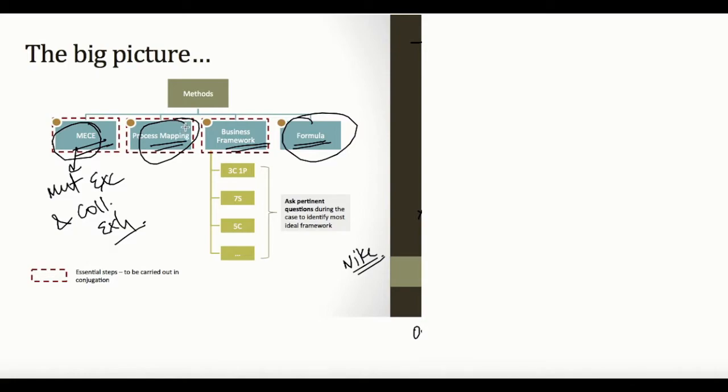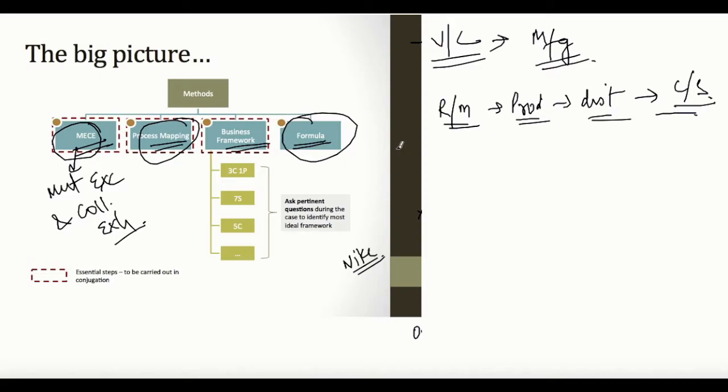Now the second aspect: process mapping. I majorly use this on the cost side of things. So let's say when I am analyzing variable costs for a manufacturing enterprise, I will simply make raw material, production, distribution, and customer service, and look at the variable costs involved in each of these. It's fairly straightforward. You can use this on the revenue side also if you find something creative here.